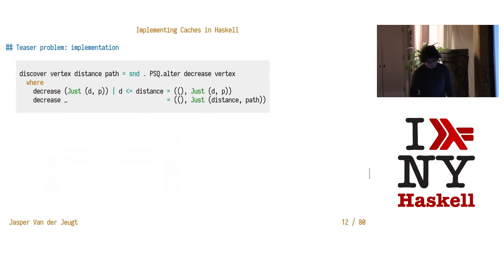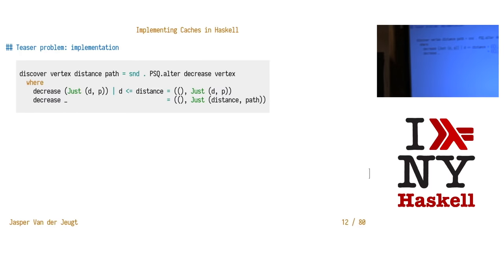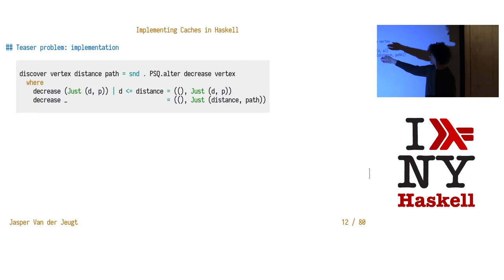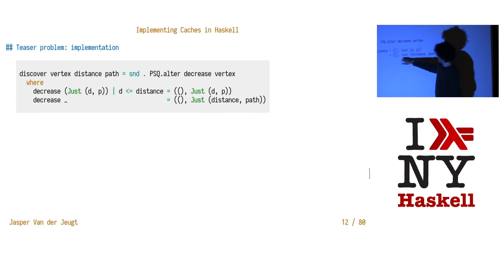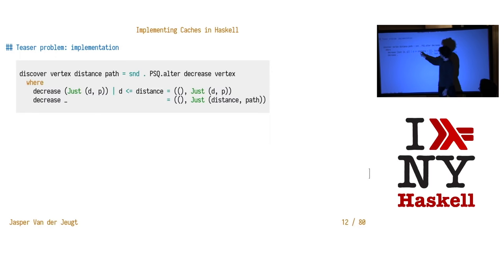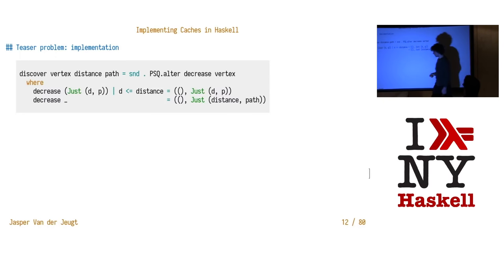Let's look at the implementation. Discover is very easy — whenever we discover a new vertex, this is the distance to the vertex and we get the path. This is actually the core reason why priority search queues are useful: they allow you to modify the priority if you have the key. We're going to alter this vertex with 'decrease' to hopefully decrease the distance there. It's a higher-order function — you give it this decrease function which takes the old value (a Maybe because it was possibly already in the map). If there's nothing, we hadn't discovered this place yet, so we just put it there with the new distance and path. If it was already in the priority search queue, we check if the new distance is smaller than the old one and then put it there.